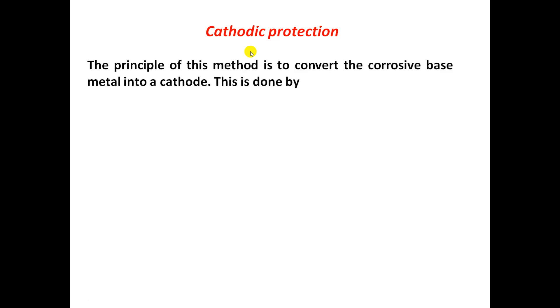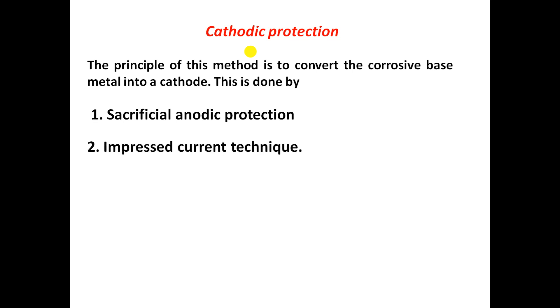Now we are going to discuss about corrosion controlled by cathodic protection. The protection of metal from corrosion is done by making it completely cathodic so that no part of the metallic object is allowed to act as an anode. We know that if a metal behaves as an anode, it can easily undergo corrosion. If there is no anodic part, then no corrosion takes place in the corrosive medium.